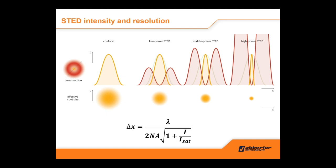This is the resolution formula: your resolution will be lambda — the wavelength of light — divided by two times the numerical aperture of the objective lens. There is an extra factor for I, which is the STED laser power, and I_sat, which is the saturation intensity of each fluorophore. It basically tells you how effectively the fluorophore is brought back to the ground state by the STED laser. If you increase I — the STED laser power — you will significantly reduce your resolution.